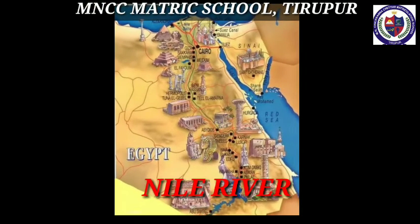Egypt lies in the northeastern corner of the African continent. It is bounded by the Red Sea on the east and the Mediterranean Sea in the north. Egypt is irrigated by the River Nile, which originates in Lake Victoria in the south and flows into the Mediterranean Sea in the north. Deserts are seen on both sides of the Nile River.